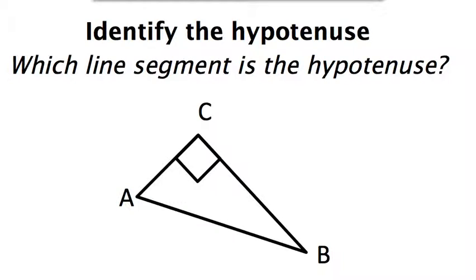This problem is asking me to identify the hypotenuse. The first step towards that is to identify the right angle. Right here is my right angle mark, so I know that angle C is my right angle.